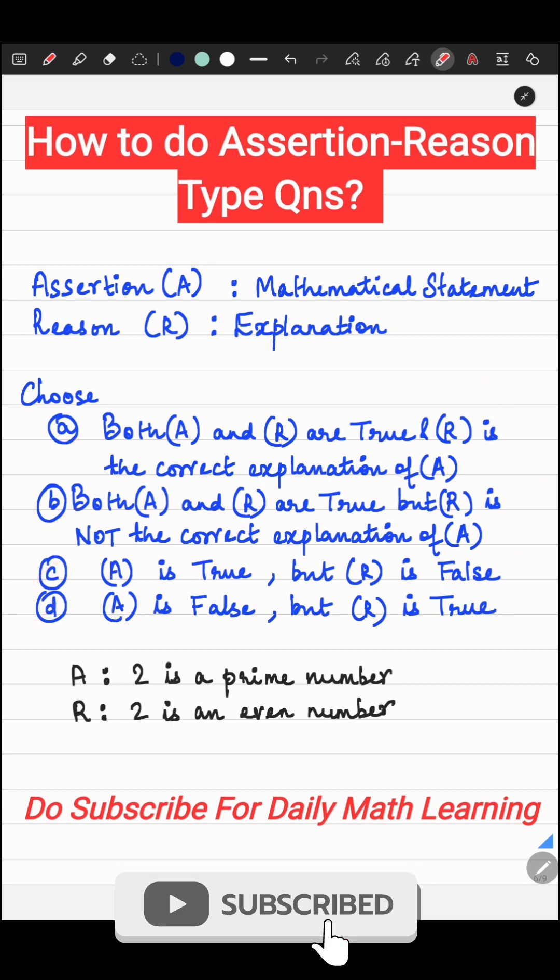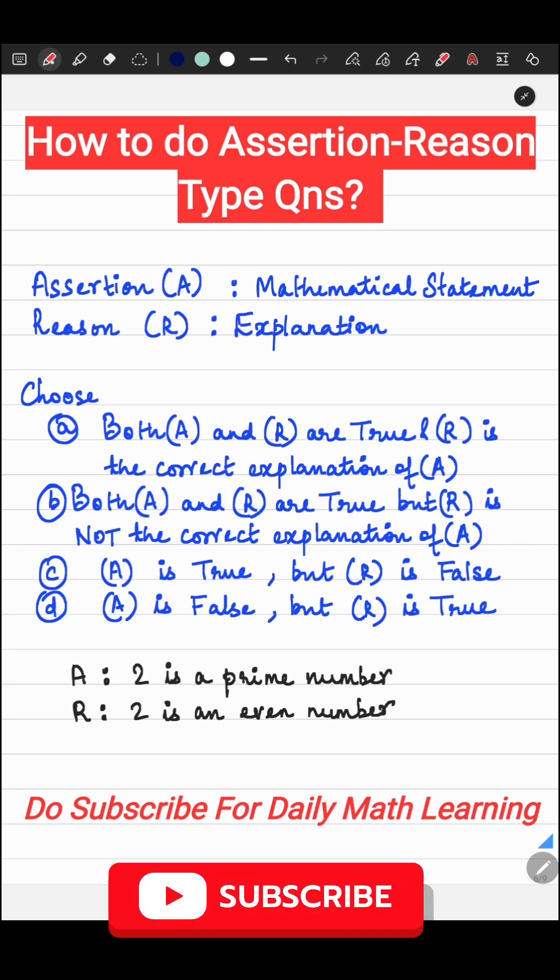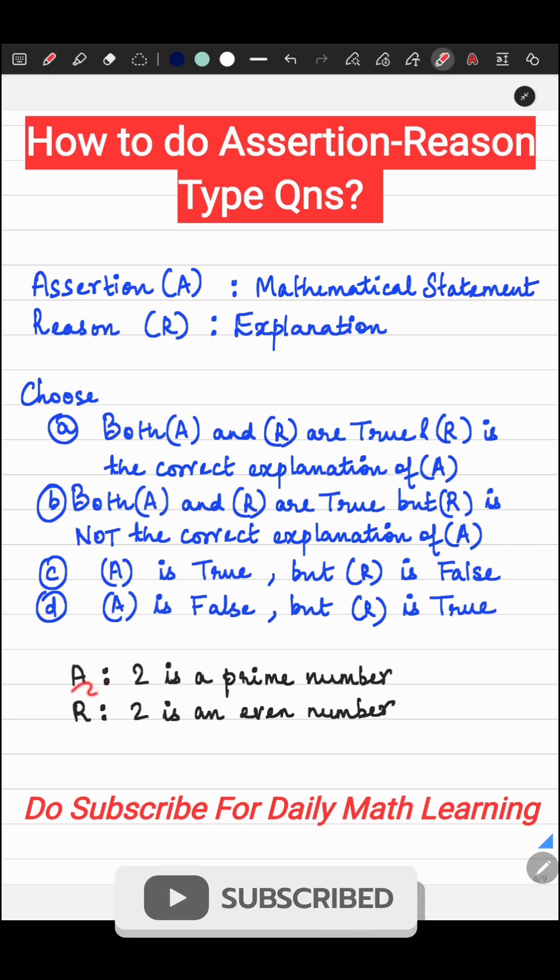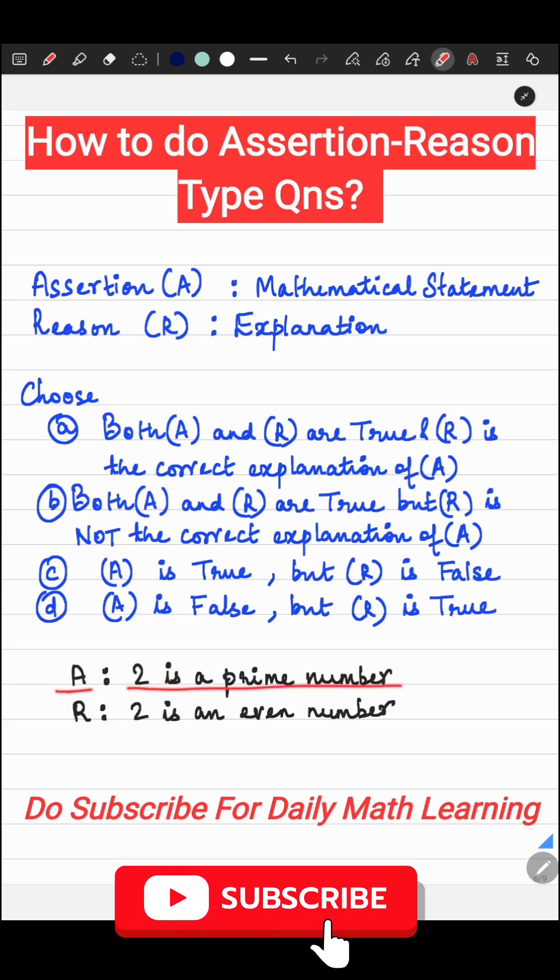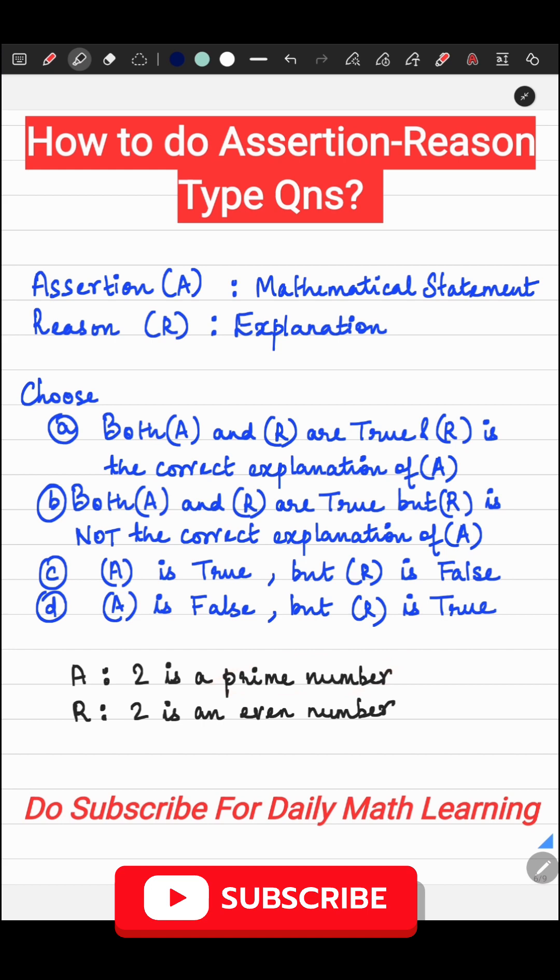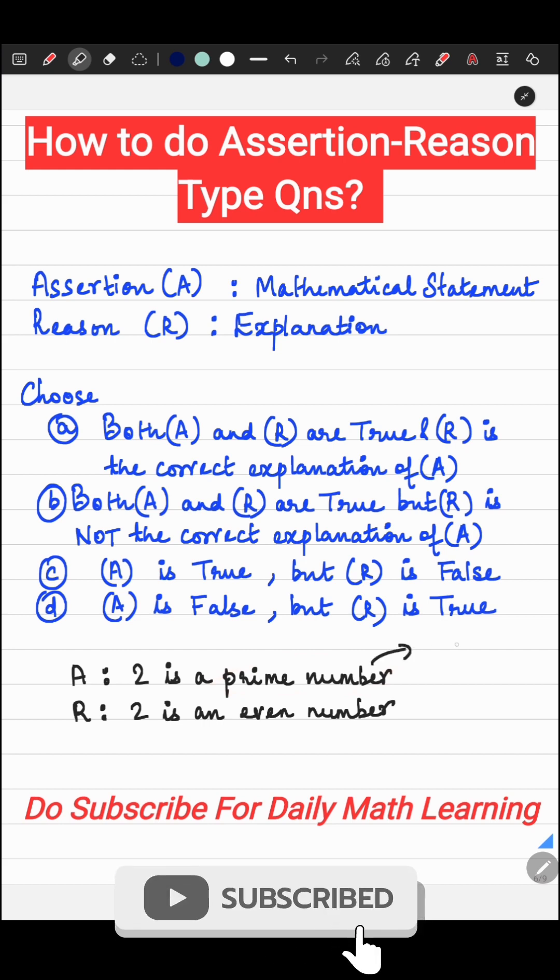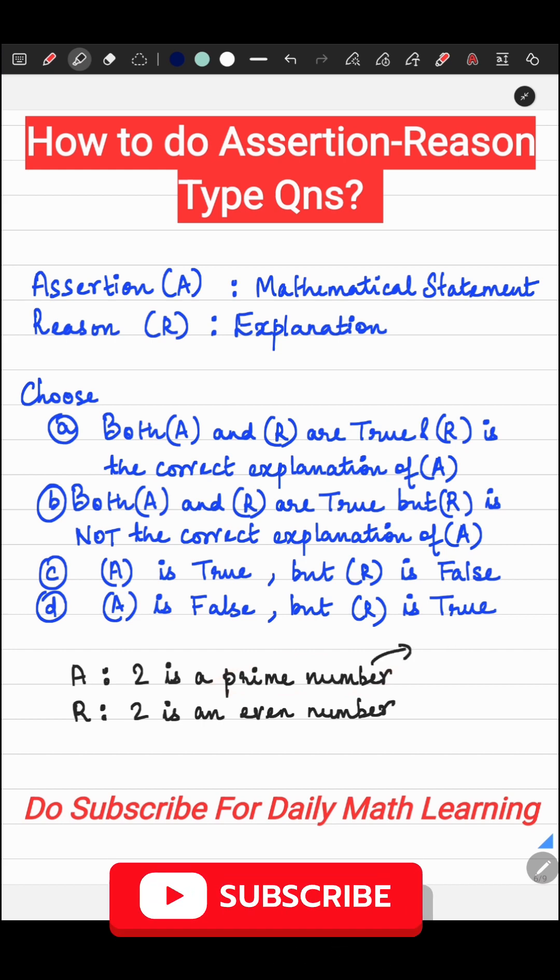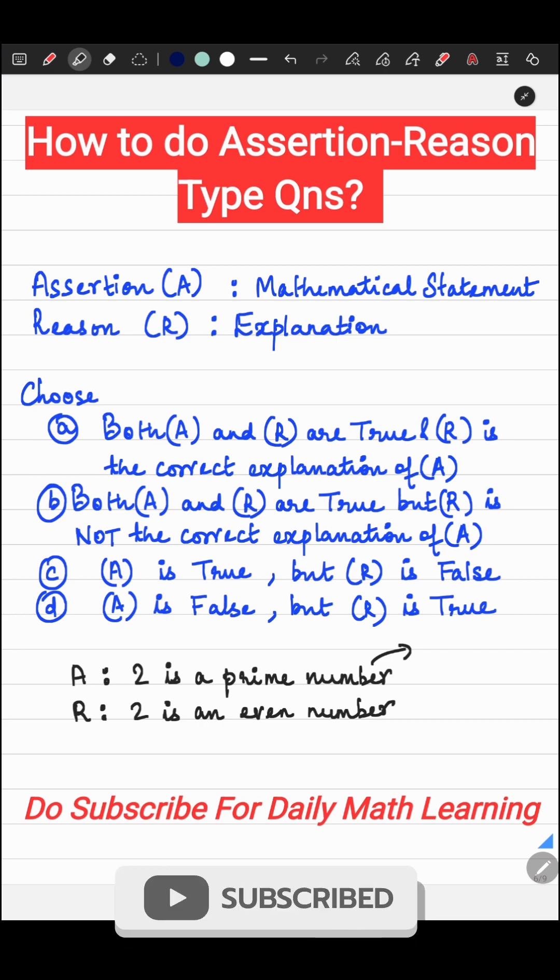Let us take a small example. For example, you are given that the assertion statement is: two is a prime number. What is a prime number? A prime number means any number which has only two factors, one and itself. Two is a prime number; it has only two factors, one and two. So this first statement is actually true.